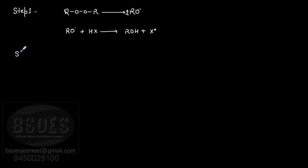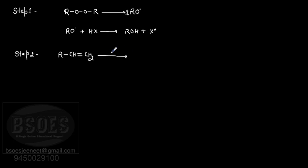Now in step two, chain propagation: the alkyne on which we need to add - the free radical goes and adds to that alkyne. There are two possibilities here: the free radical can generate on one carbon, or on the other carbon of the double bond.